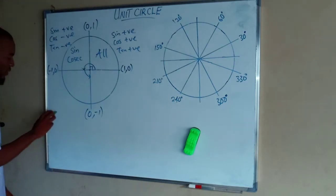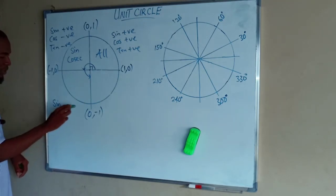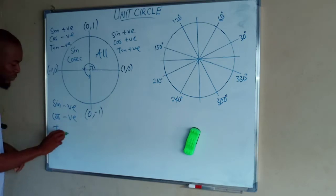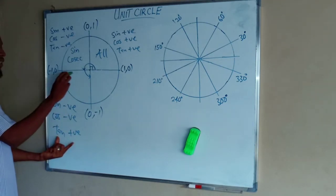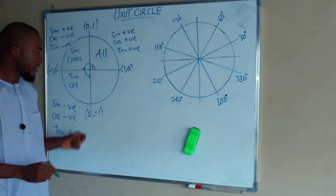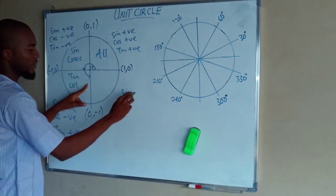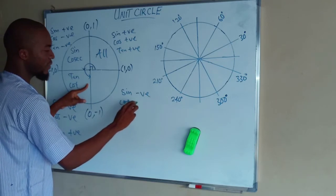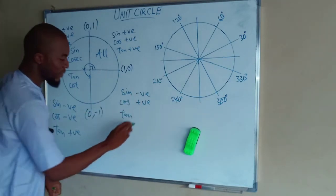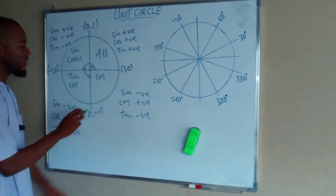Moving on to the third quadrant: all x and y values are negative. So sine is negative, cosine is also negative, and tan is negative divided by negative, which is positive. Only tan is positive here, and its inverse, which is cotangent, is also positive. In the fourth quadrant, the y-plane is negative while the x-plane is positive. So sine, which depends on y, is negative. Cosine, which depends on x, is positive. Tan is negative divided by positive, which is negative. Only cosine is positive here, and its inverse, which is secant.